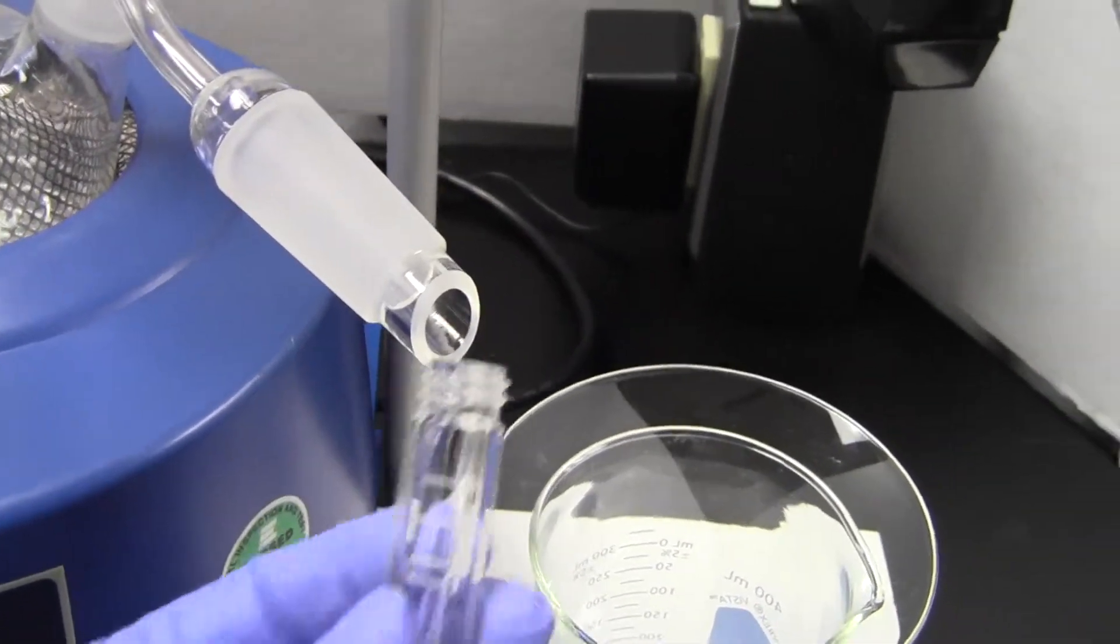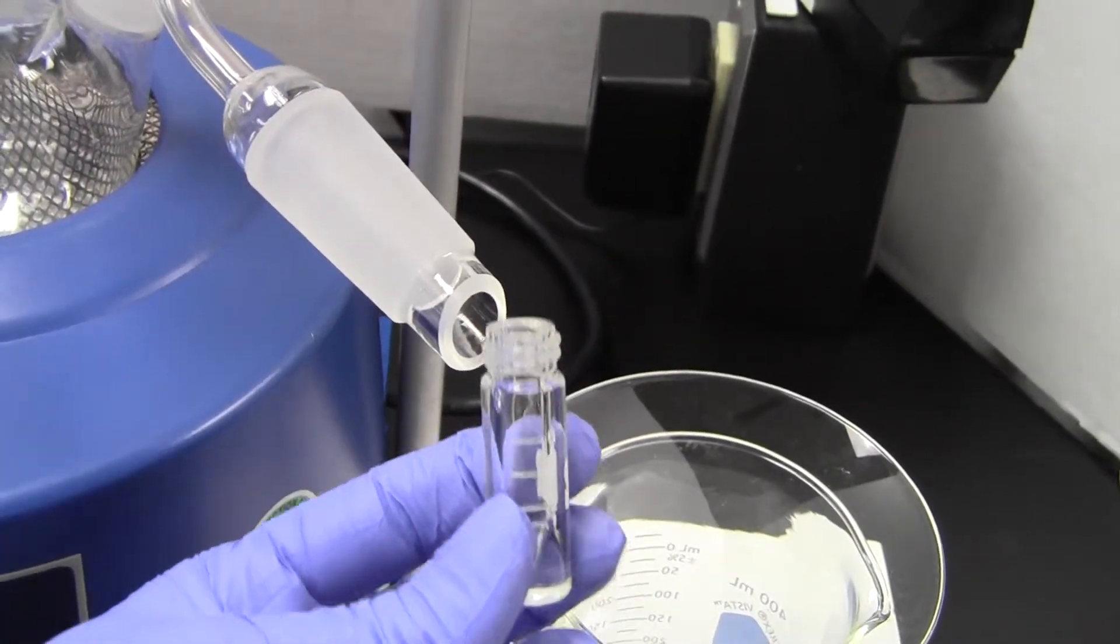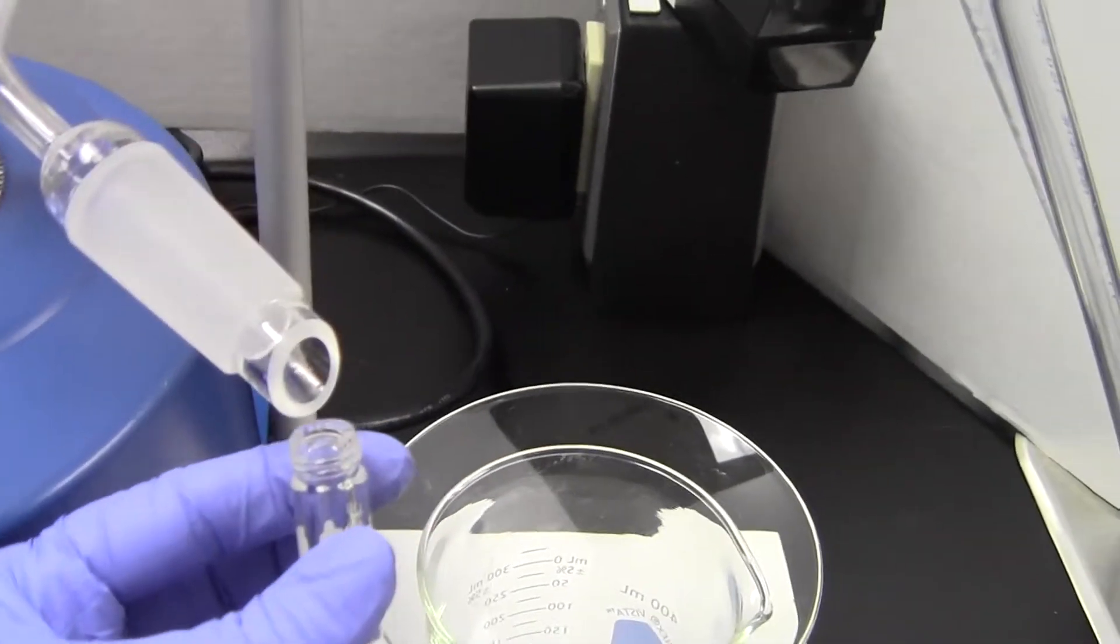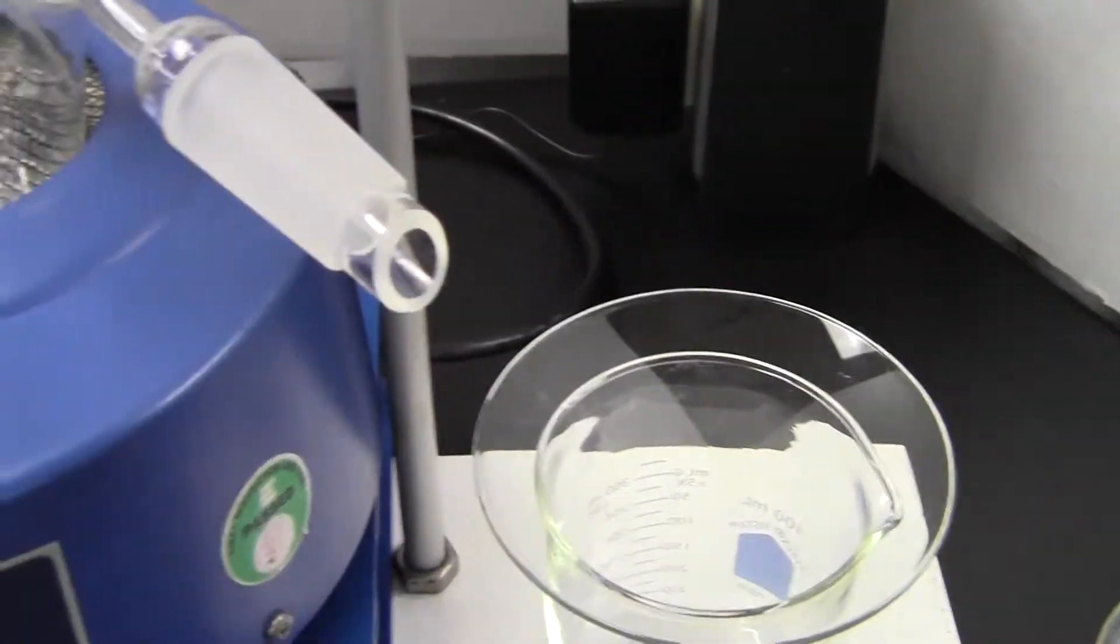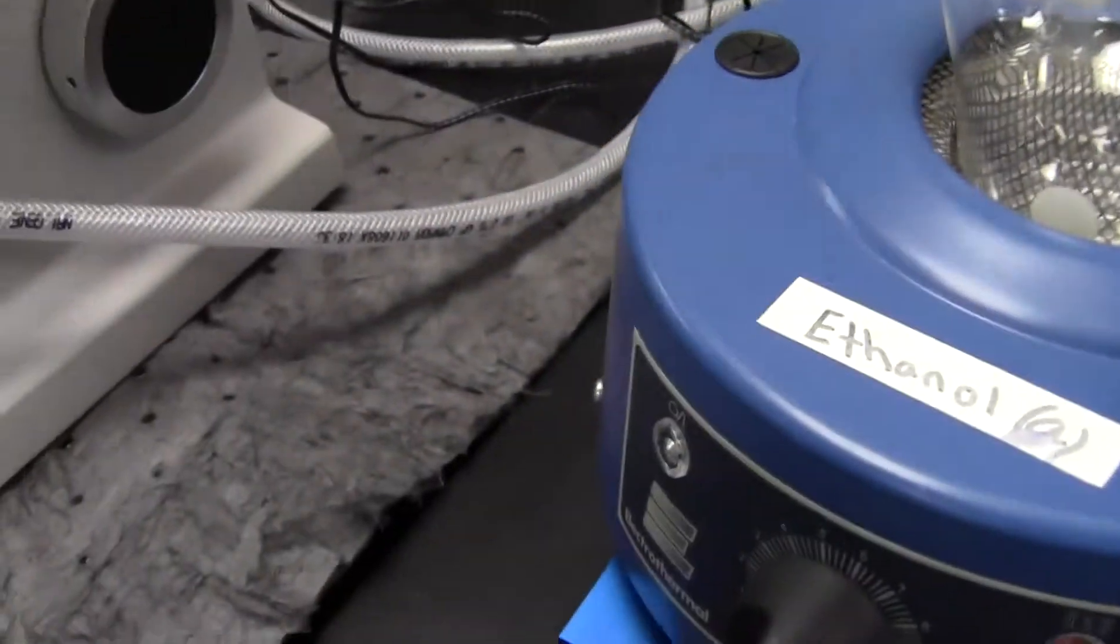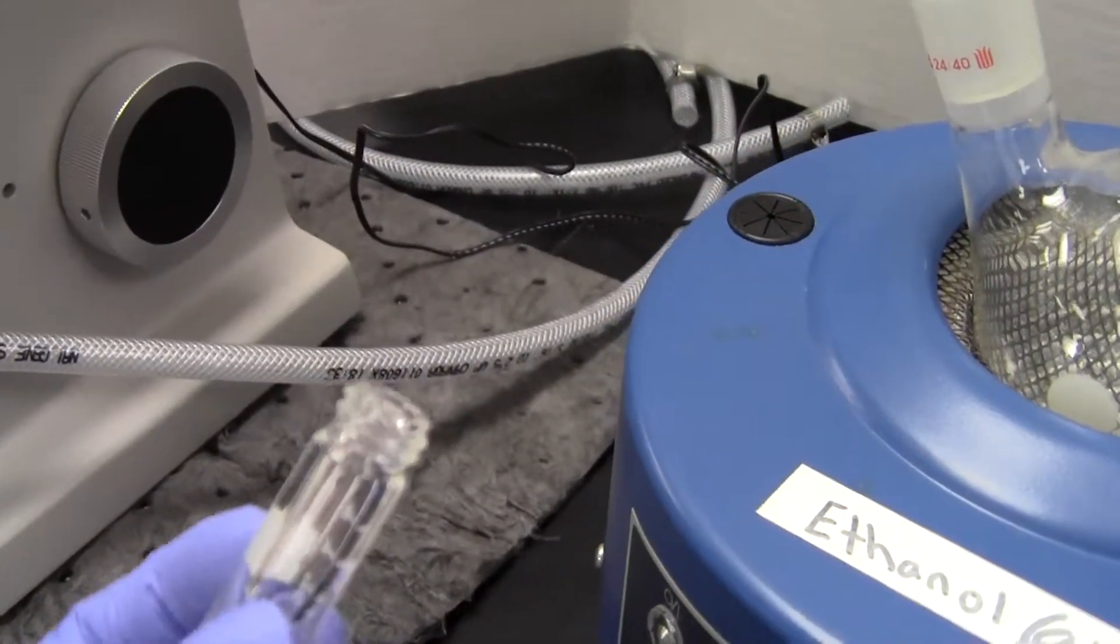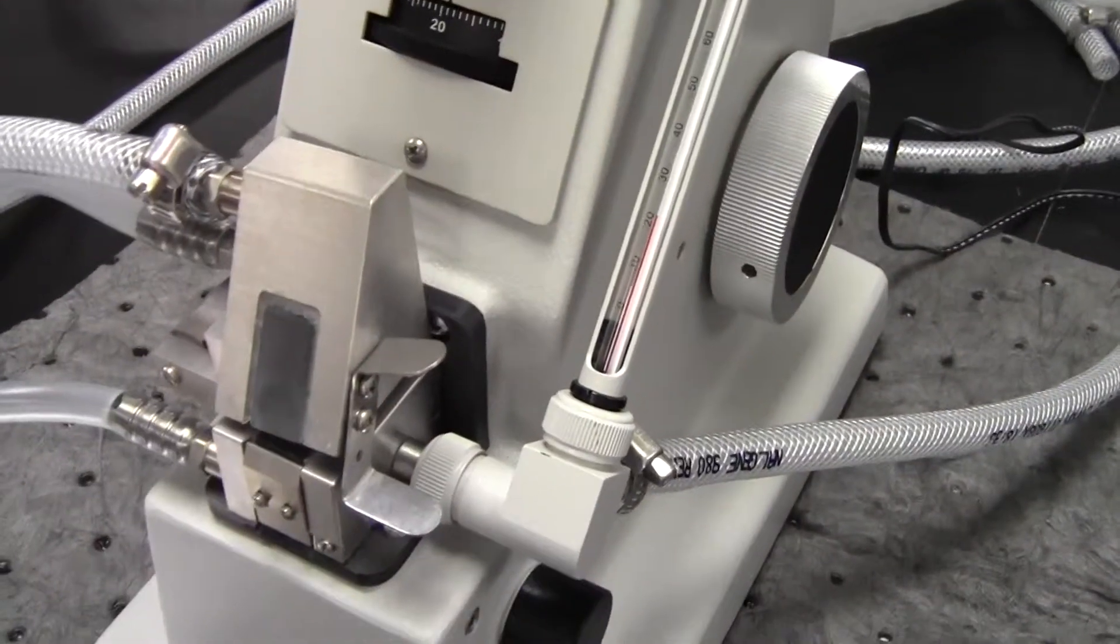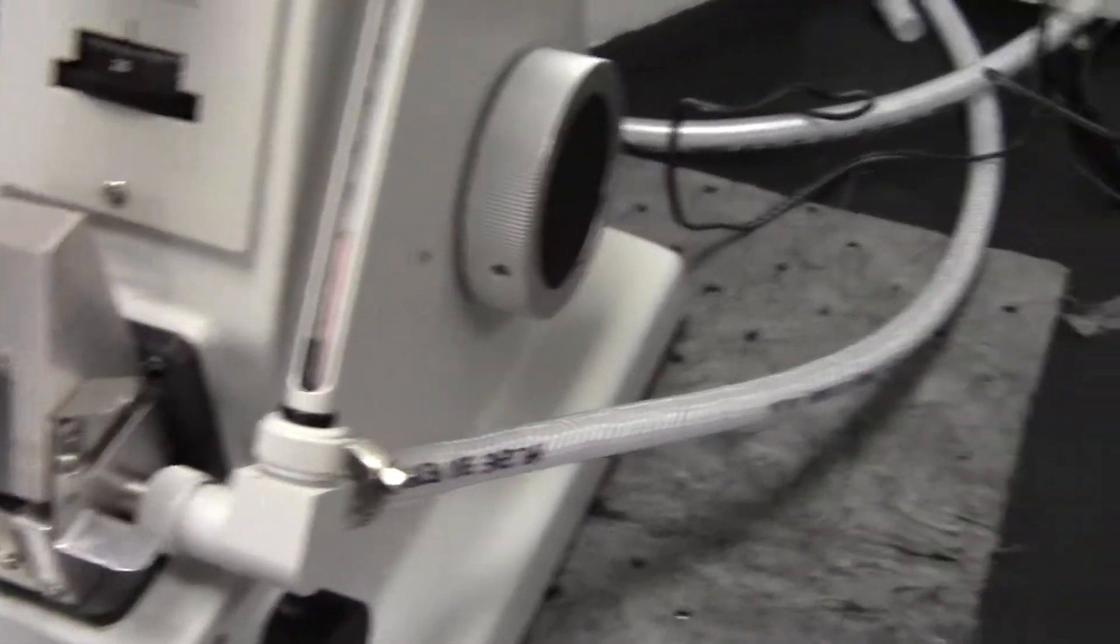A vial like this—this might not be the exact one; you'll want a little bit bigger one, but we'll supply that. Collect that in here, and then again with a nice clean pipette, take the liquid out of the vial and put it onto your prism and measure the refractive index.